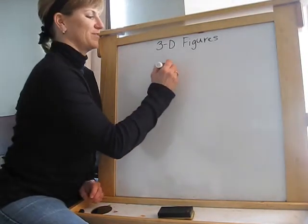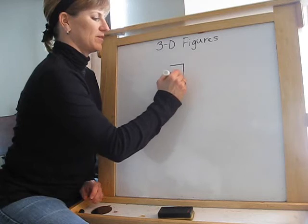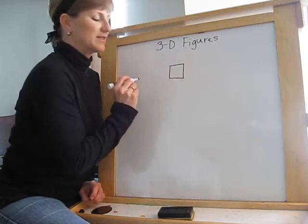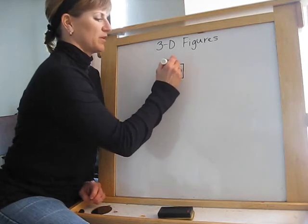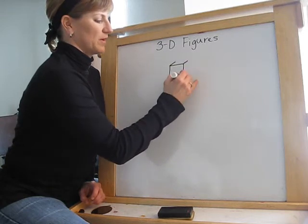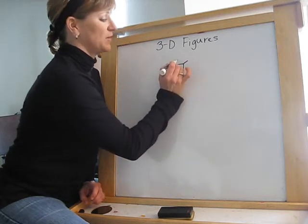Alright, how to draw a 3D figure. You start with your plane figure, which is also flat. You draw your edges at an angle going away from you, and you connect them.